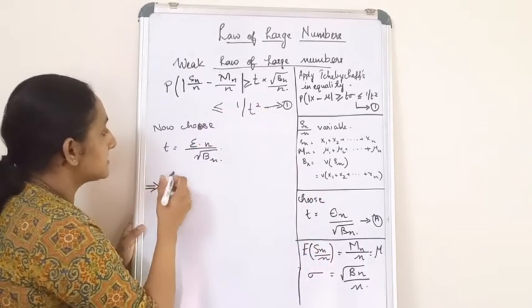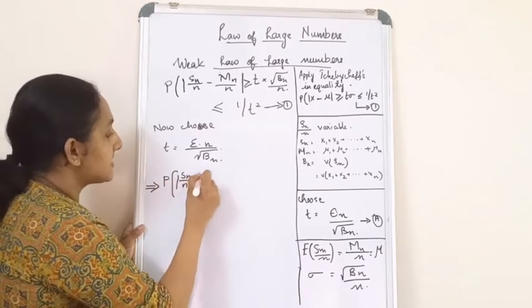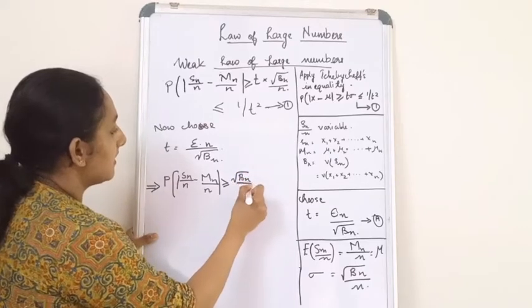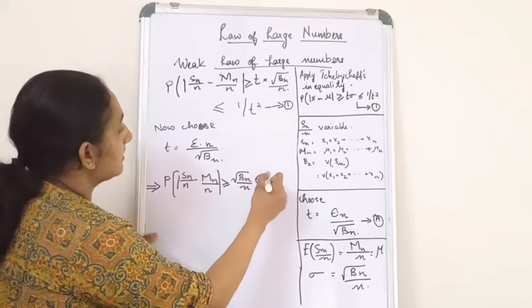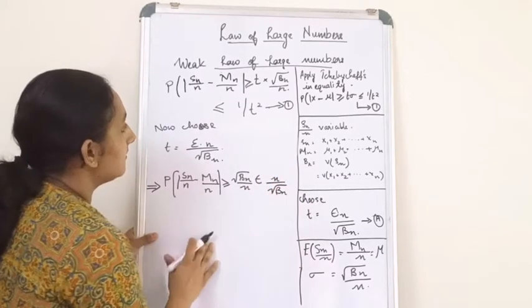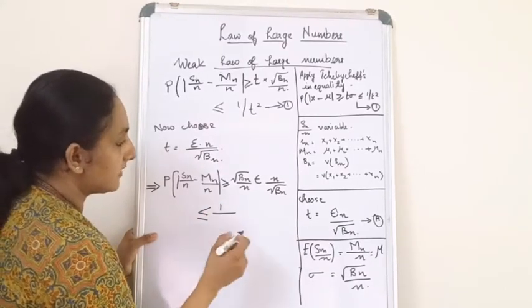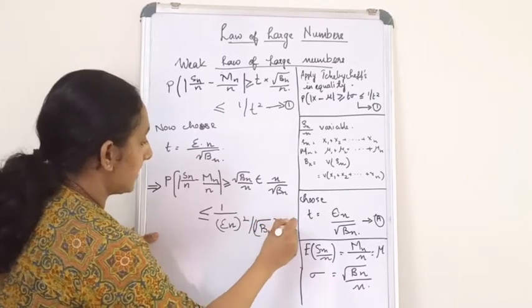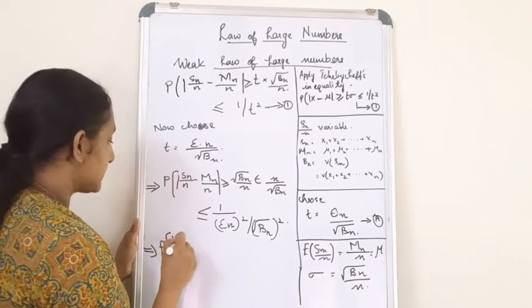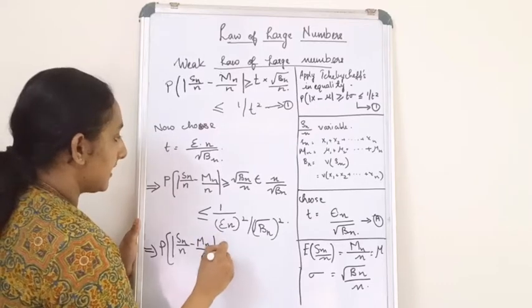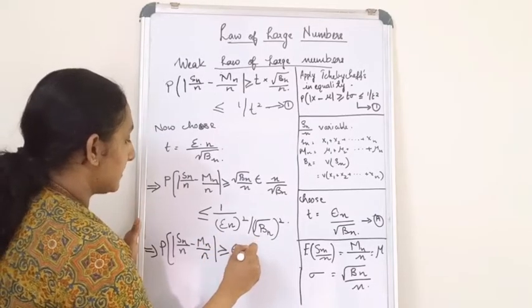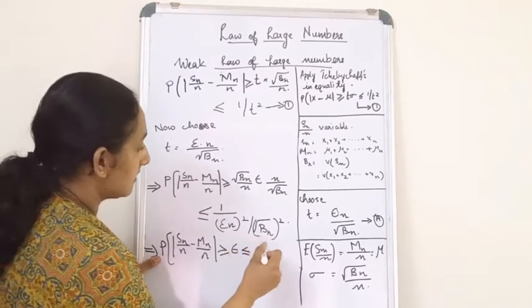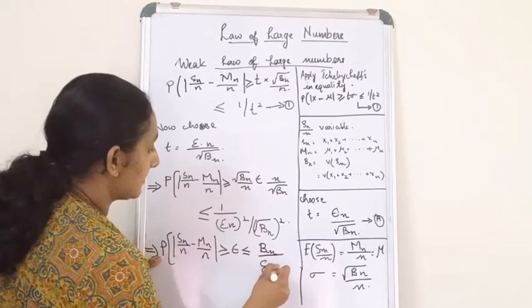Substituting equation (a) into equation (1), we get: the probability that |Sn/n - mn/n| >= (square root of Bn/n) times (epsilon*n divided by square root of Bn) is less than or equal to 1 divided by (epsilon*n / square root of Bn) squared. This simplifies to: the probability that |Sn/n - mn/n| >= epsilon is less than or equal to Bn divided by (epsilon*n) squared.